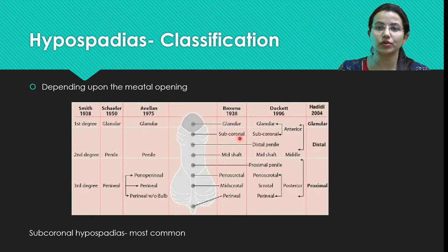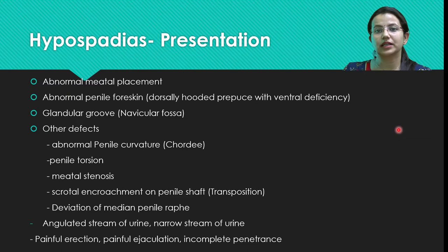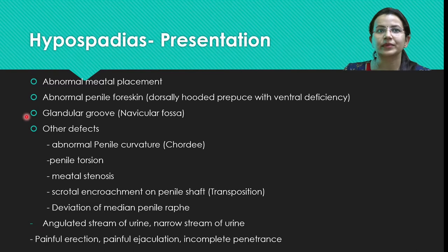Subcoronal hypospadias is the most common variant. Parents typically come to the OPD saying the child's stream is lower or the child doesn't urinate in the normal direction. That is the common complaint, at which time we look at the placement of the meatus.